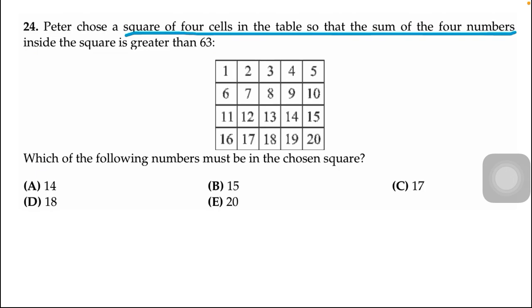We have to choose a square of four cells. It means in a square there must be four cells from this table that is given in the middle of this slide. So the sum of the four numbers inside the square must be greater than 63.